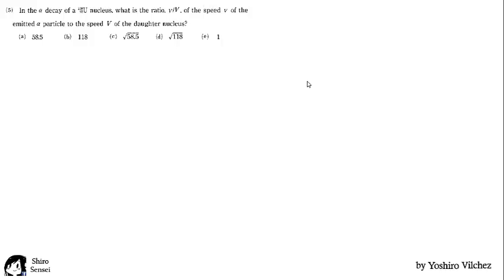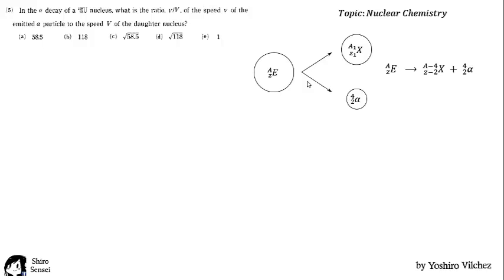The topic here is nuclear chemistry, alpha decay, which means the emission of an alpha particle and the daughter nucleus, where the number of mass and atomic number are conserved. In the problem, the uranium emits an alpha particle and the daughter particle X, so the mass of them are 4 and 234 respectively.